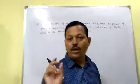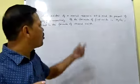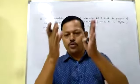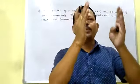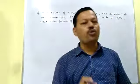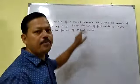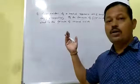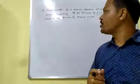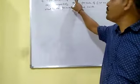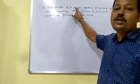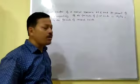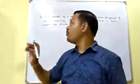As you know, to find the empirical or molecular formula, you need the percentage composition of elements. You can divide the percentage by atomic mass to get the mole ratio. But here the problem is the metal is not named — you don't know if it is iron, copper, or some other metal. So first you have to find out the atomic mass of this metal.